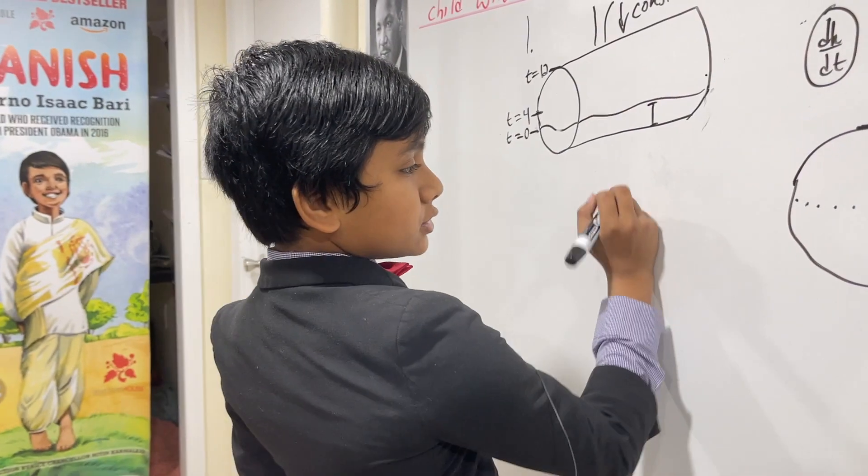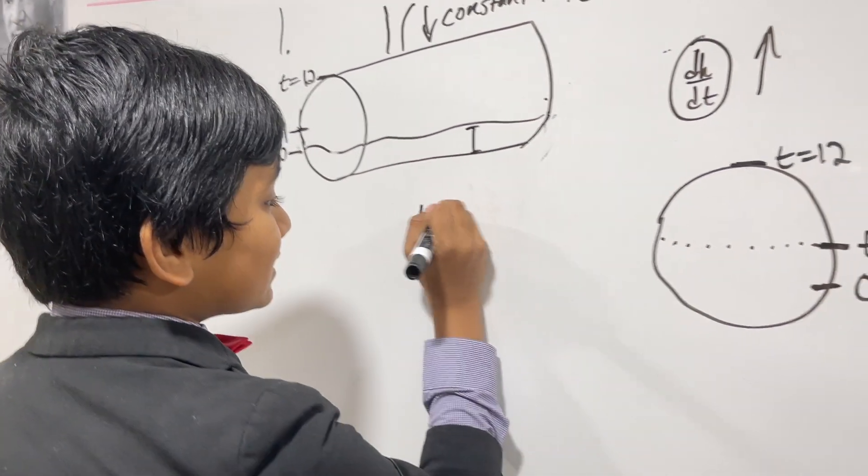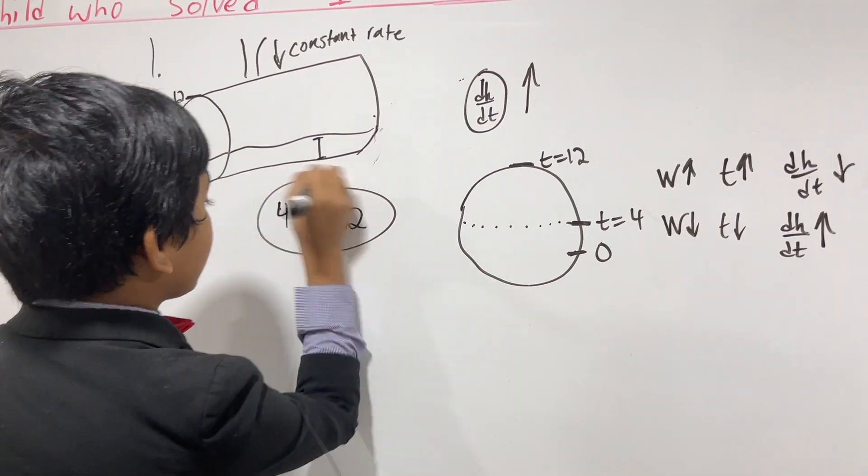So that means the answer would be: four is less than t is less than twelve. That's our interval.